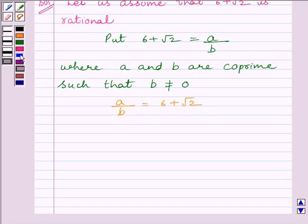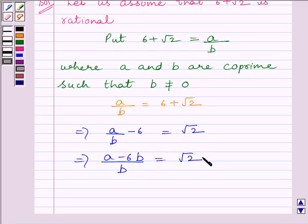This implies A upon B minus 6 is equal to root 2. This implies A minus 6B upon B is equal to root 2. Now A and B are integers.